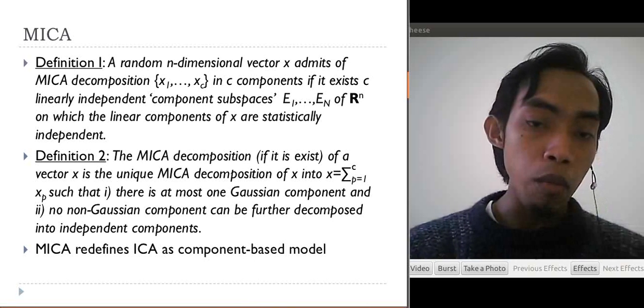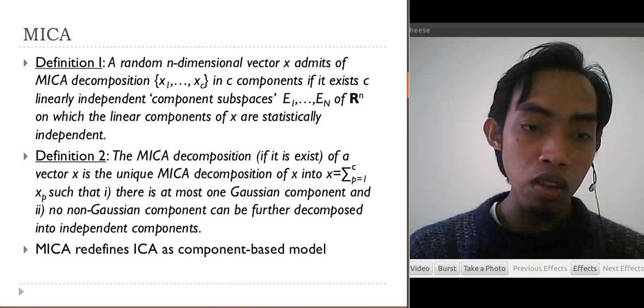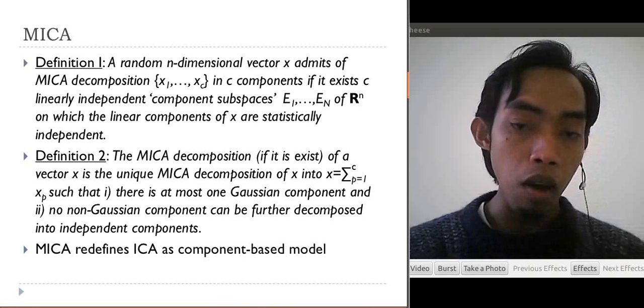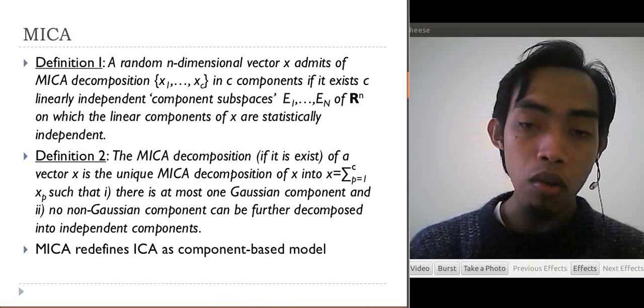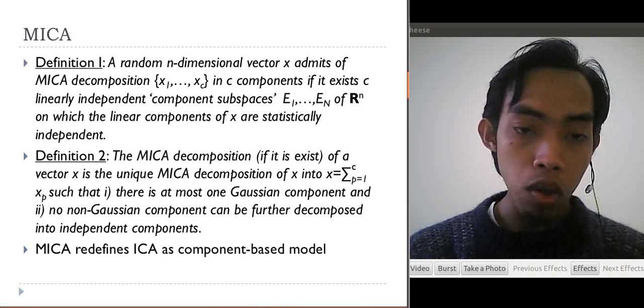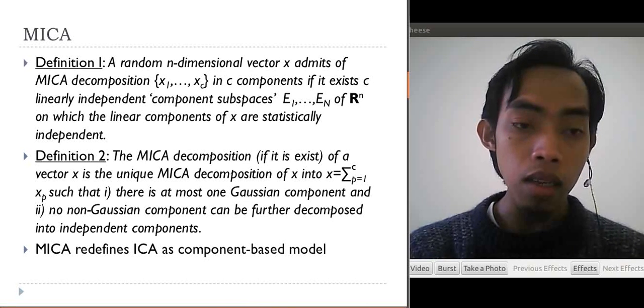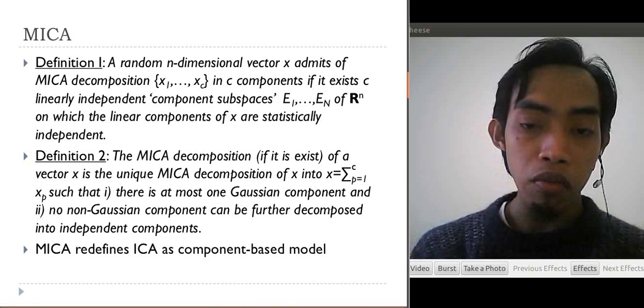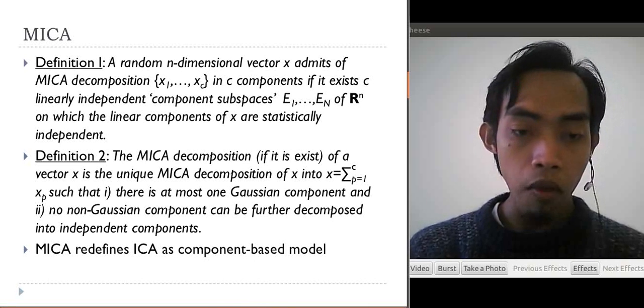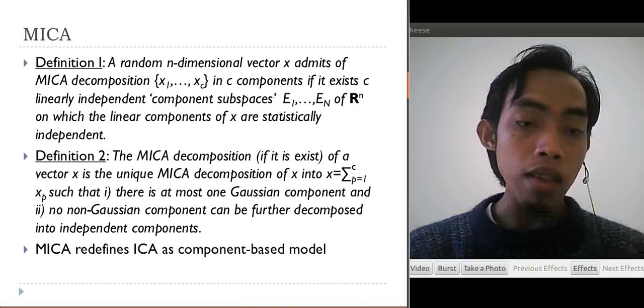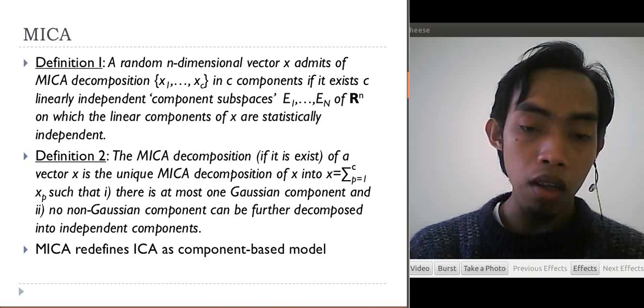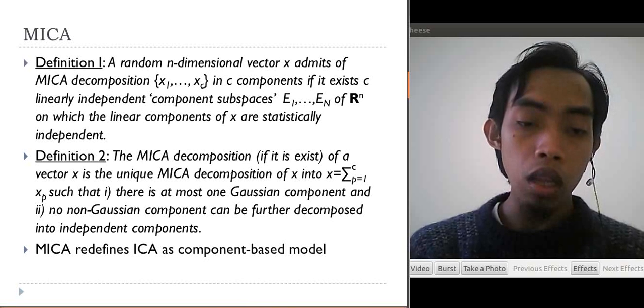Definition two: the MICA decomposition, if it exists, of a vector X is the unique MICA decomposition of X into X equal to sum from P equals 1 until C, XP, such that first, there is at most one Gaussian component, and second, no non-Gaussian component can be further decomposed into independent components because we use the concept of statistical independence. MICA redefines ICA as a component-based model to extract multidimensional components.